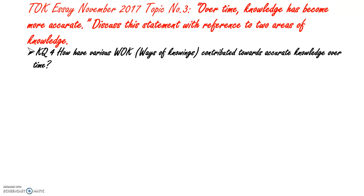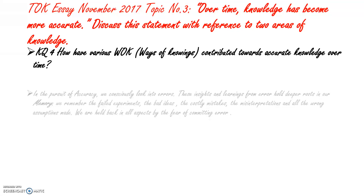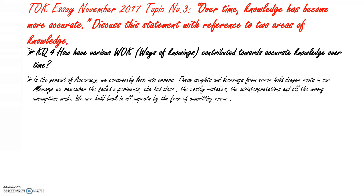Knowledge Question 4: However, various ways of knowing contribute towards accurate knowledge over time. In the pursuit of accuracy, we consciously look into errors. These insights and learnings from error hold deeper roots in our memory — we remember the failed experiments, the bad ideas, the costly mistakes, the misinterpretations and all the wrong assumptions made. We are held back in all aspects by the fear of committing error.